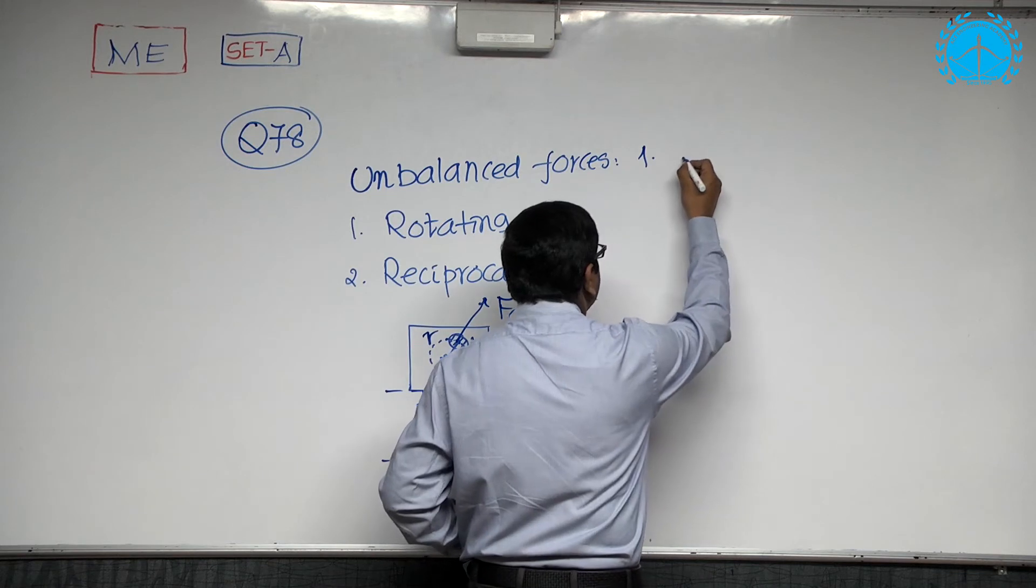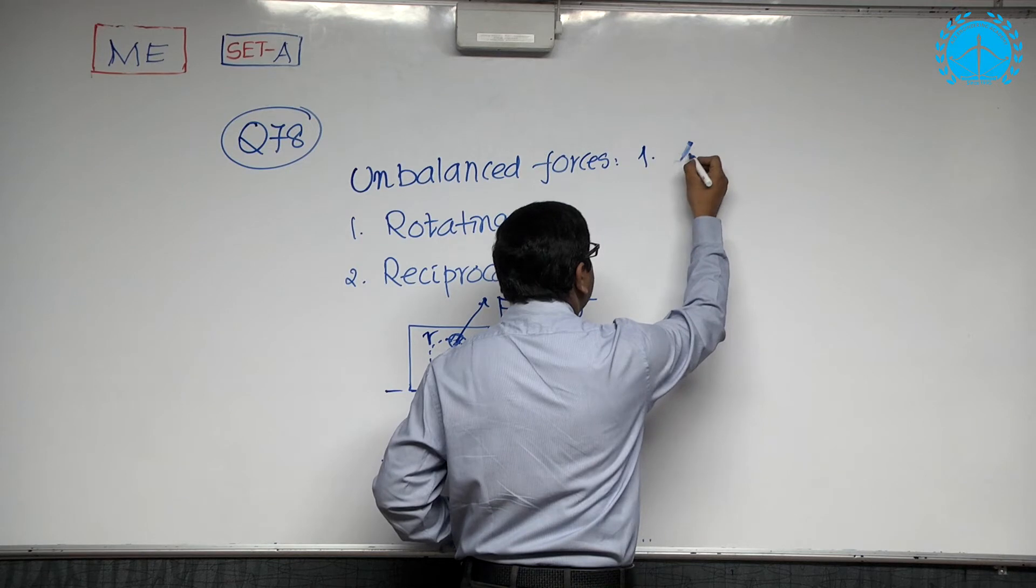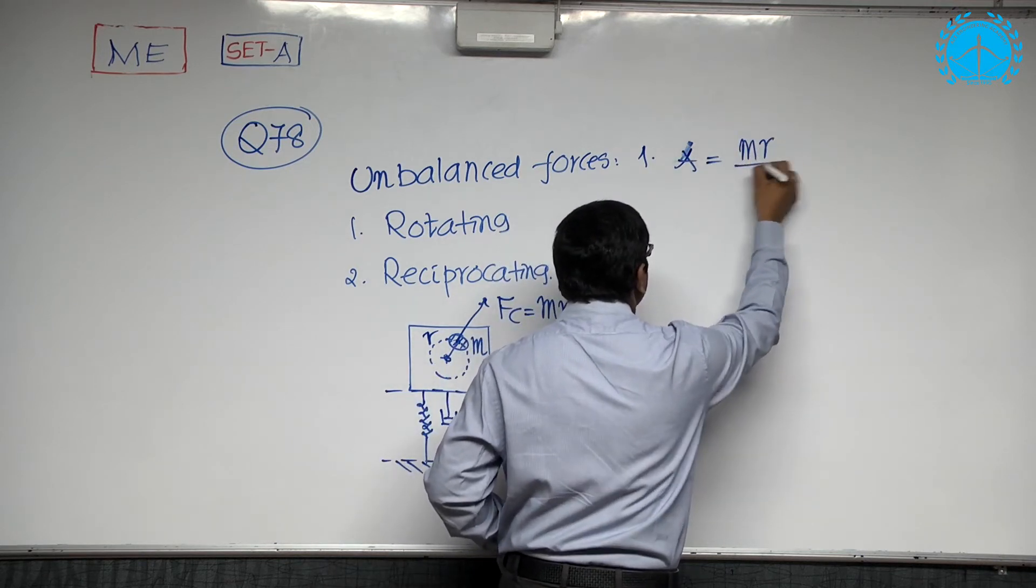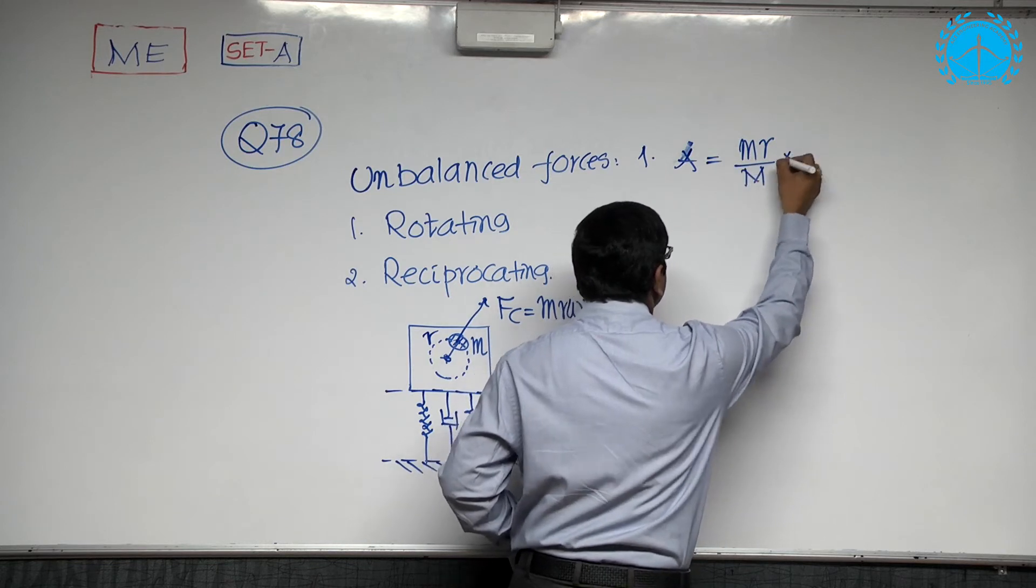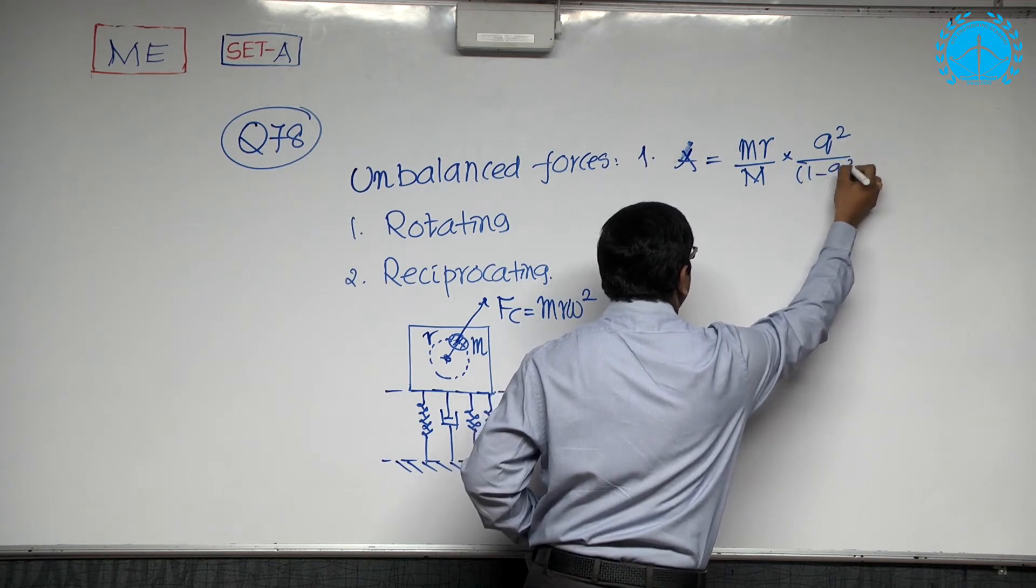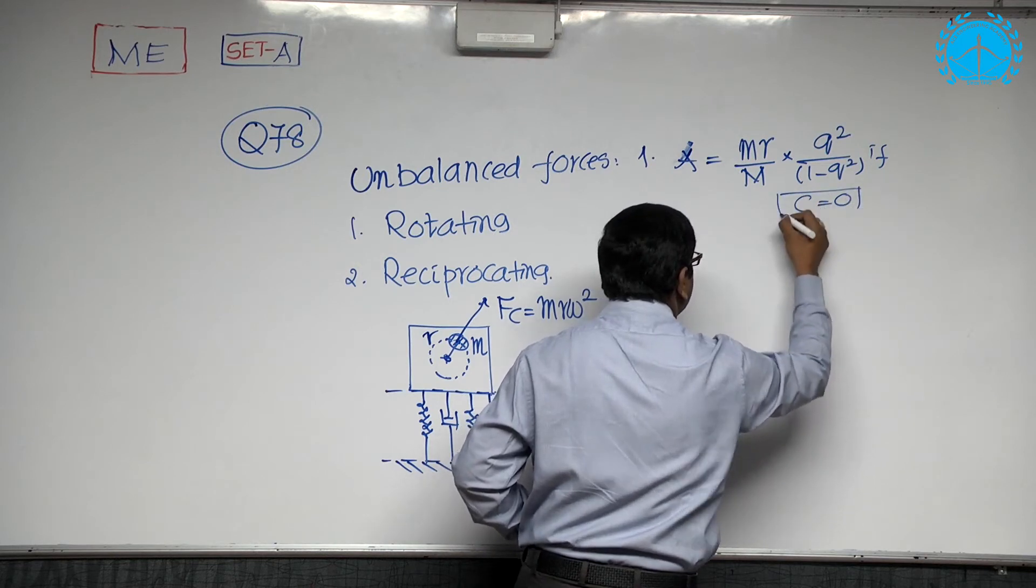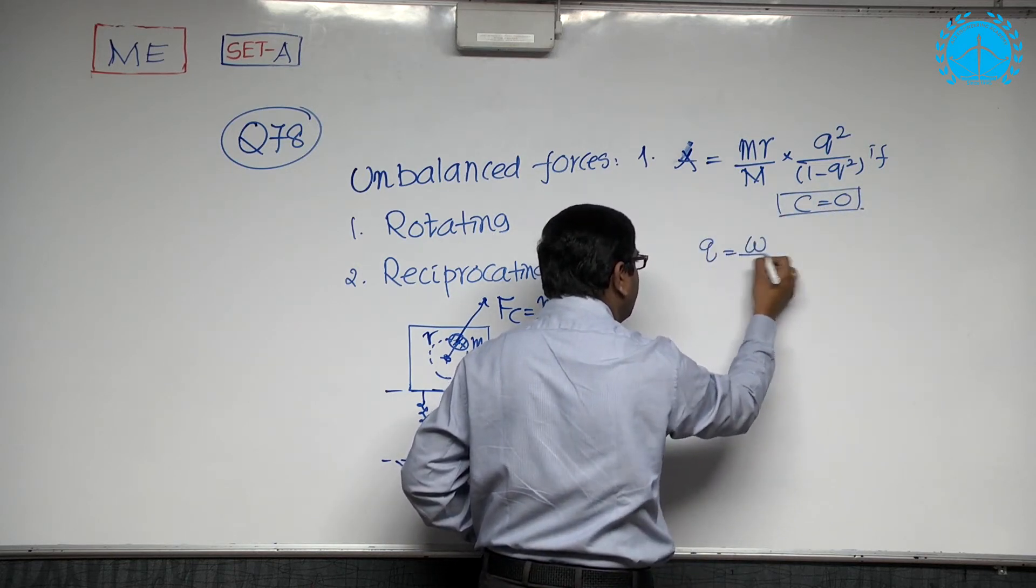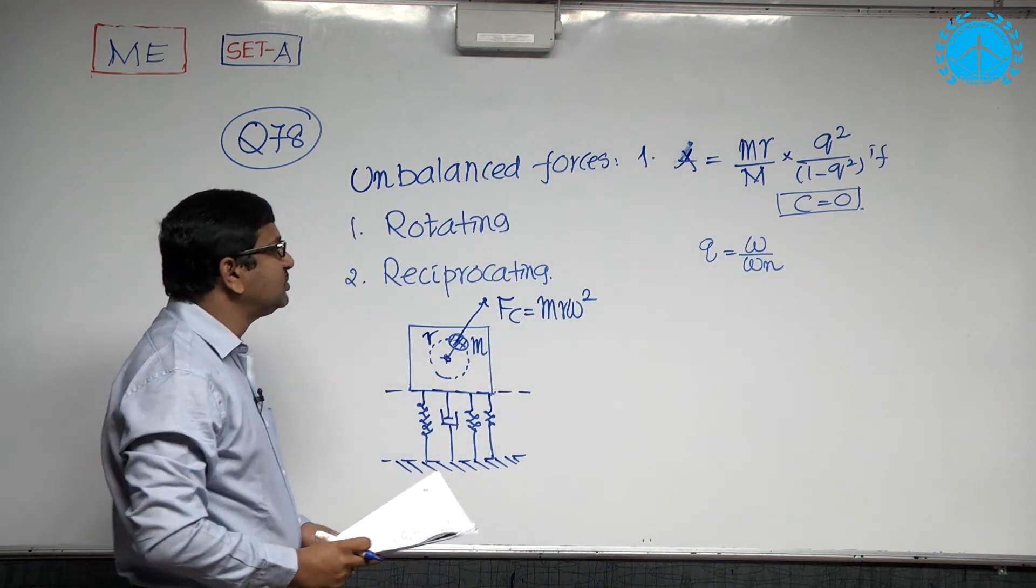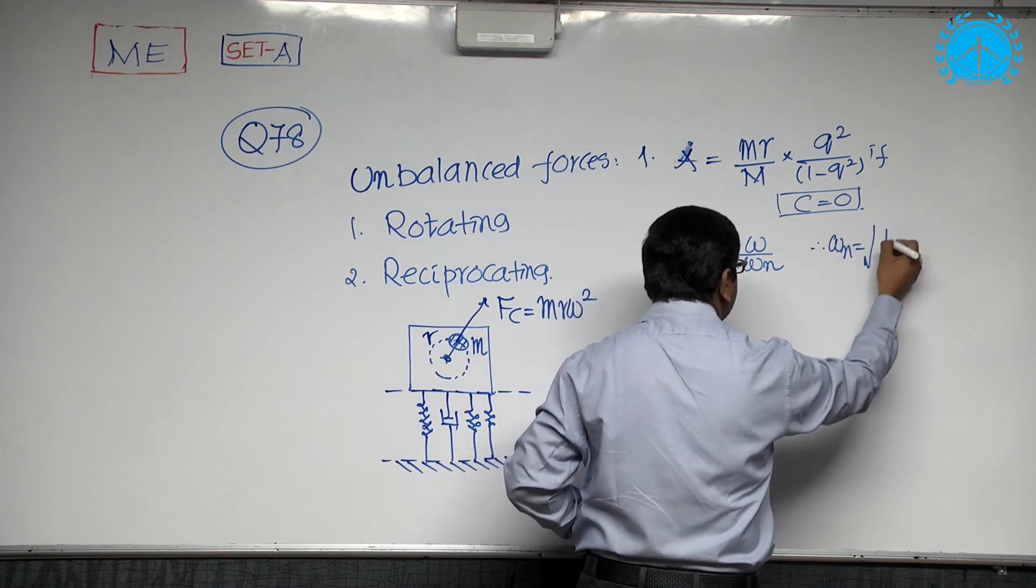If you go by this, the force coming onto it is given as dynamic amplitude equals m into r by total mass into q squared divided by 1 minus q squared, if there is no damping assumed to be zero. Q stands for omega by omega n.